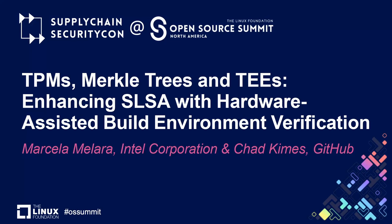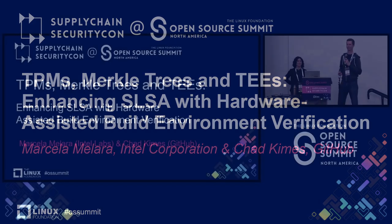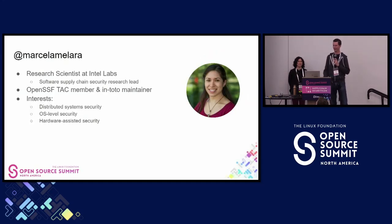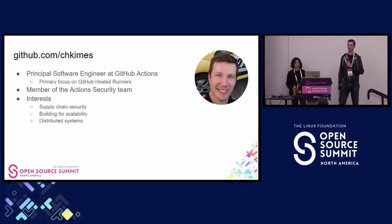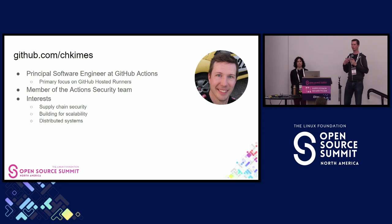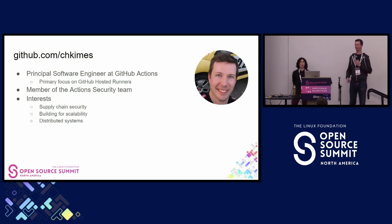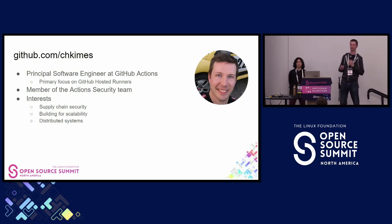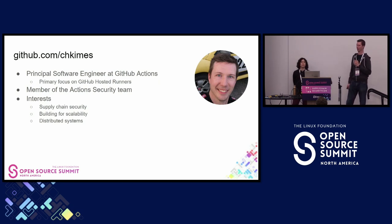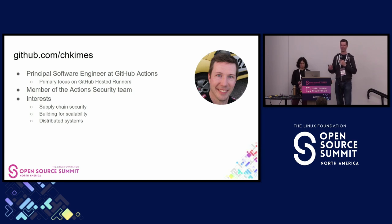Welcome to TPMs, Merkle Trees, and TEEs. I'm Chad Gimes, a principal software engineer. I've been working on GitHub Actions since before the beta in 2019. My focus has mostly been on the GitHub-hosted runners — everything we do to run GitHub-hosted runners, scaling to 20 million jobs a day. I've also been a founding member of the Actions security team, dealing with bug bounties and recommending product improvements. My interests align with supply chain security and building high-availability, scalable distributed systems.